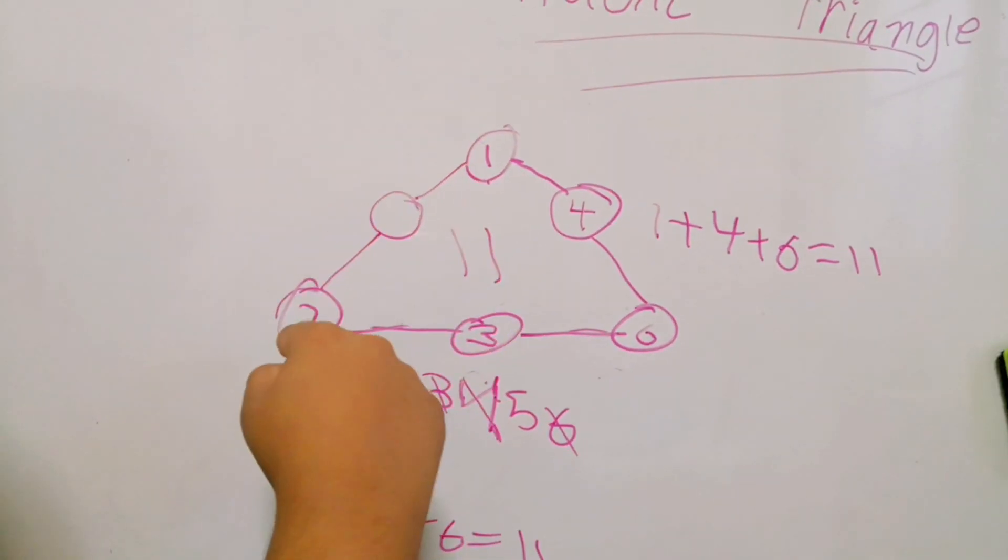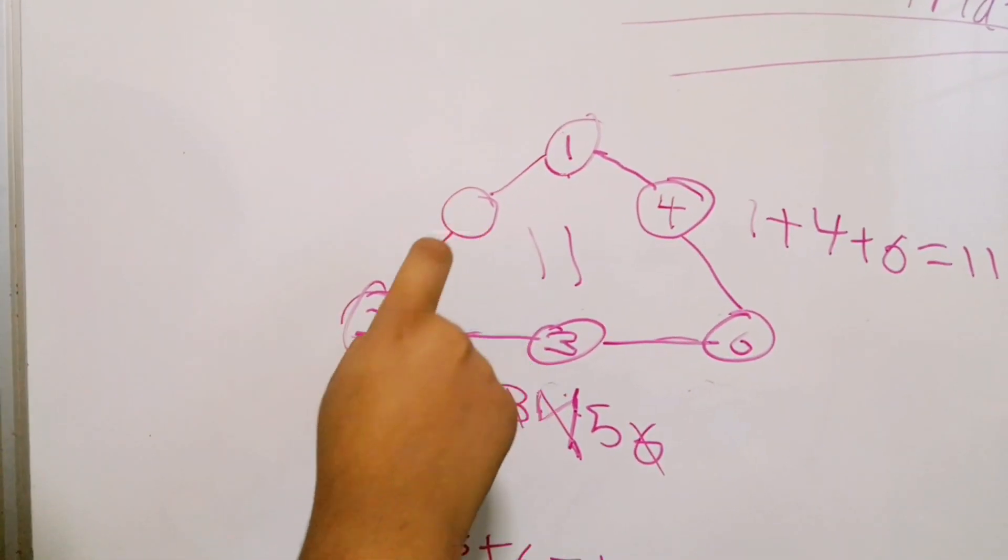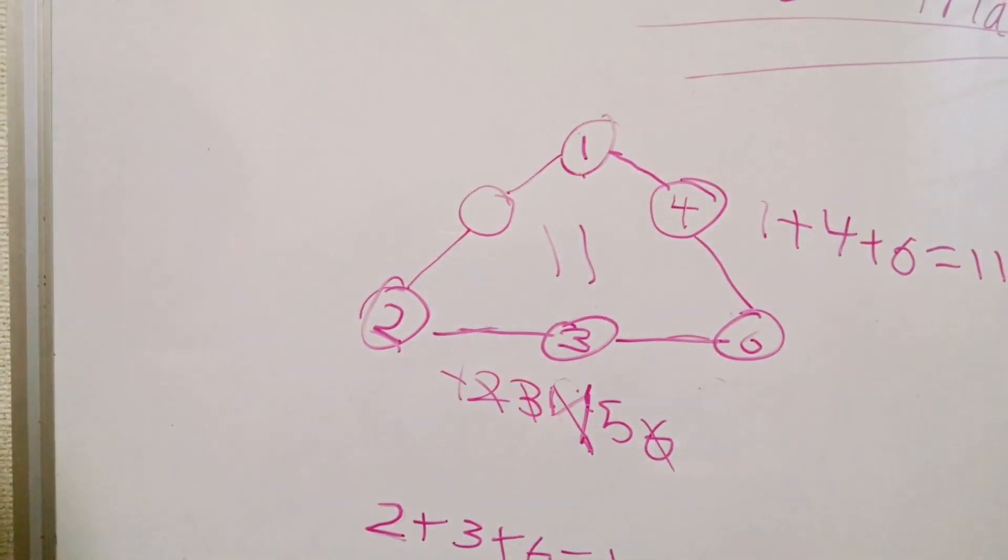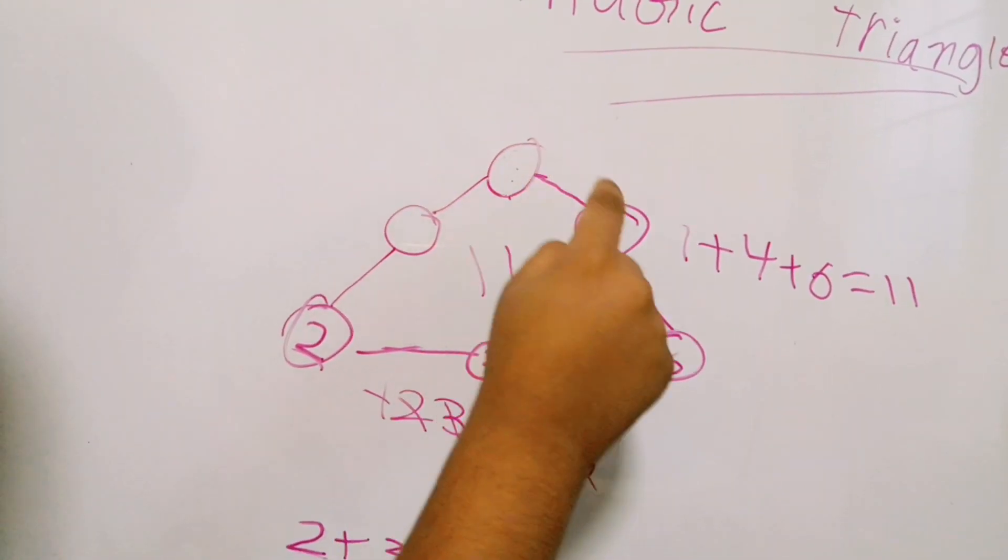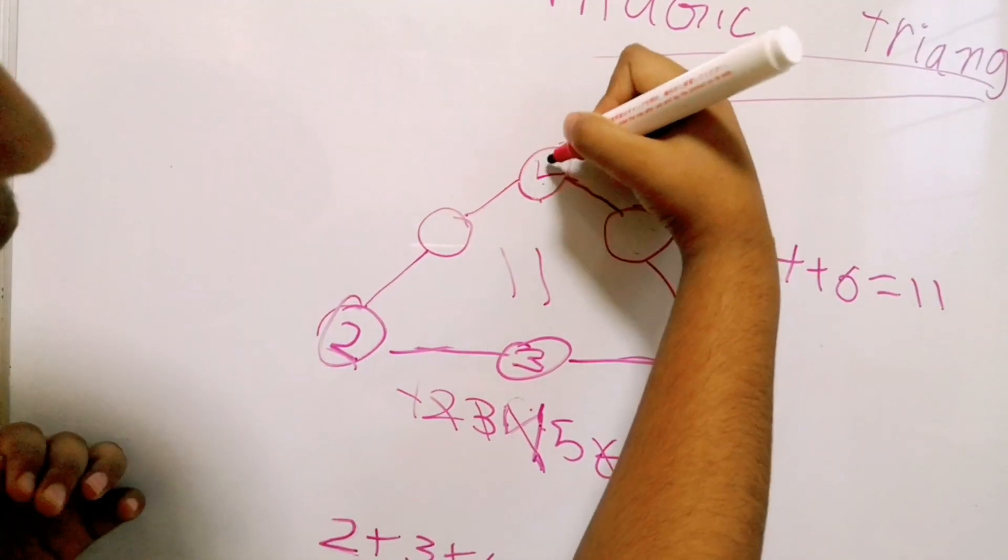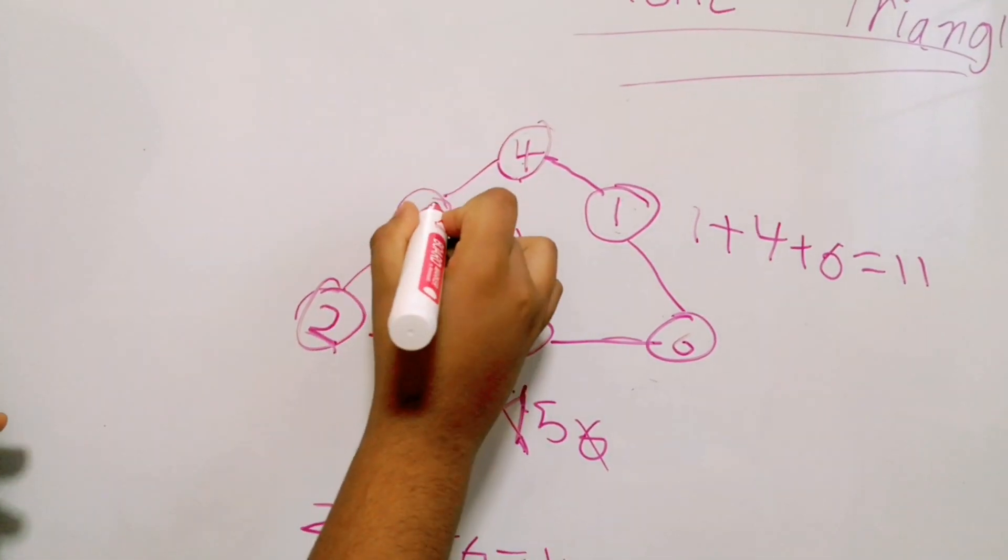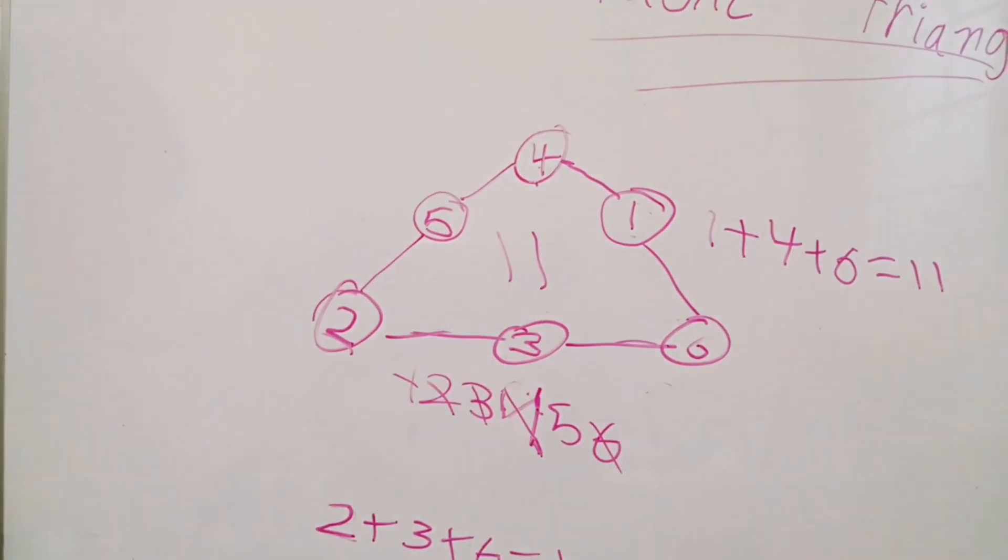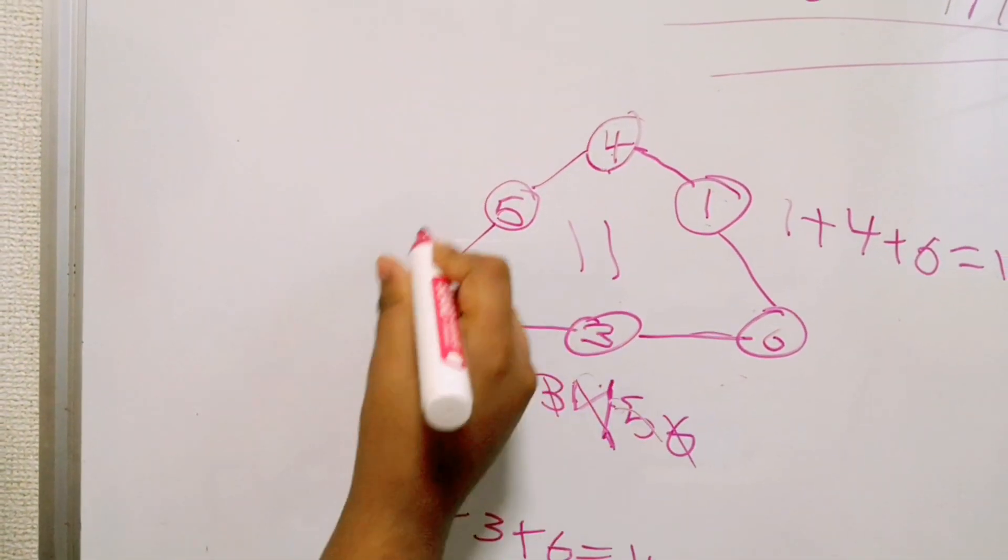So this side, if I put, and the remaining number is 5. So if I put 5, it will be only 8. So I'm exchanging 4 and 1. Now I can put 5 in here. And this side should be 11.